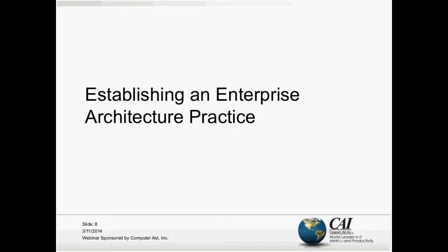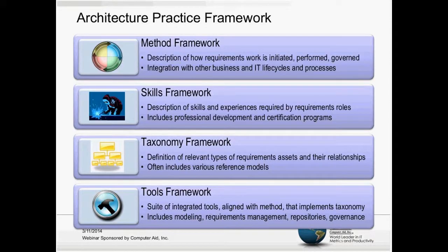Today we're talking about establishing an enterprise architecture practice, on the backdrop of discussing what an architecture framework is. That's a very overloaded term in the enterprise architecture industry. We've tried to specify its main constituent elements, relabeling this an architecture practice framework — the things you need to have in place to perform enterprise architecture work. Its critical components are a method framework, a skills framework, a taxonomy framework, and a tools framework.